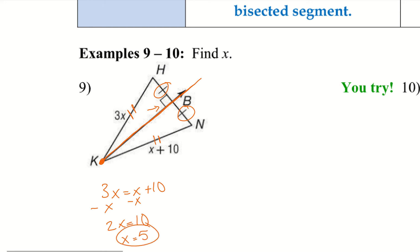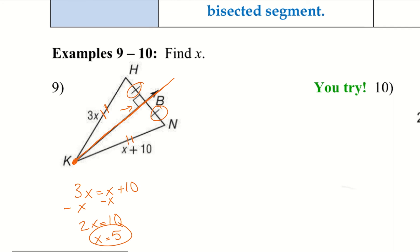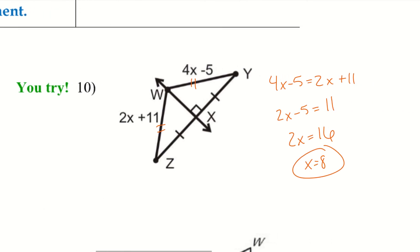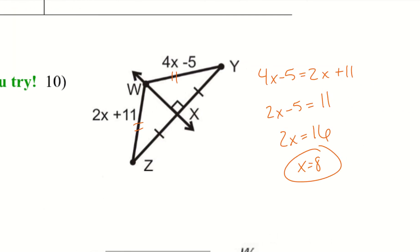Go ahead and take a second to try number 10. Hopefully you paused the video and tried that out. Here is the work for number 10: we have that same situation with a perpendicular bisector, W lies on the perpendicular bisector, so WZ and WY are congruent.